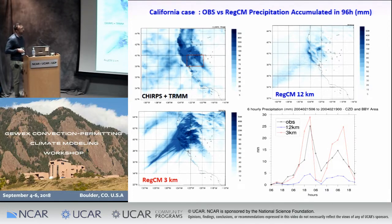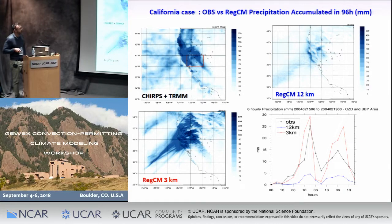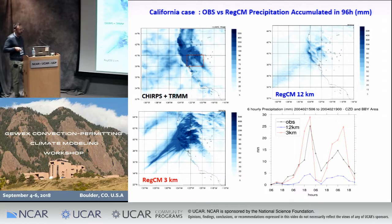Here we have a temporal series of the 6-hour precipitation for this period averaged over the area. The black line represents the observation, the red line is the convection-permitting simulation, and the blue line is the 12-kilometer simulation. As you can see, the model is able to reproduce the temporal evolution of the event, and the convection-permitting simulation is also able to reproduce the intensity of the maximum, with a tendency to overestimate the second one.